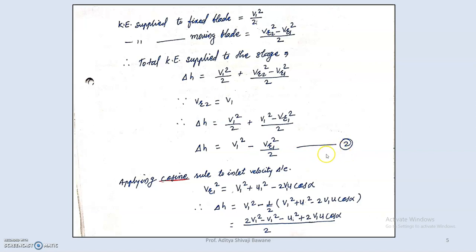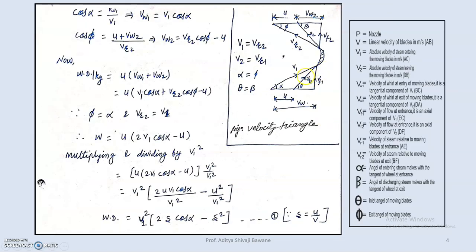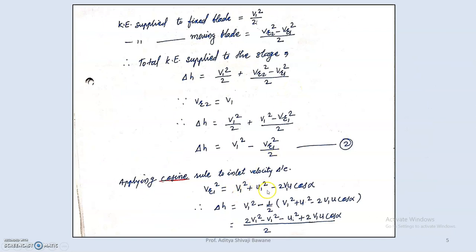Applying the cosine rule to the inlet velocity triangle to find vr1 in terms of alpha: vr1 squared equals v1 squared plus u squared minus 2 v1 u cos alpha. Substituting back, delta h becomes v1 squared minus one-half of (v1 squared plus u squared minus 2 v1 u cos alpha) divided by 2, which simplifies to (v1 squared plus 2 v1 u cos alpha) divided by 2.